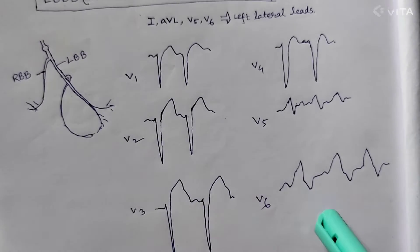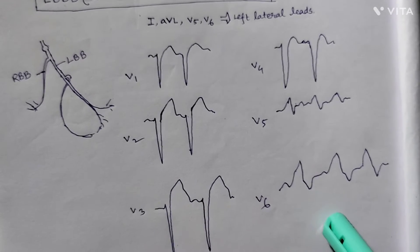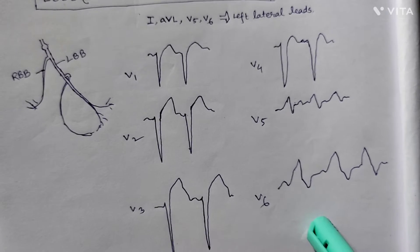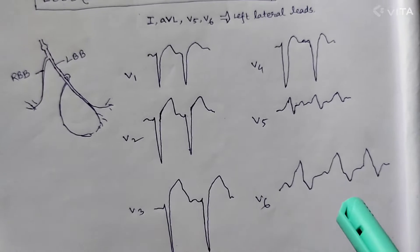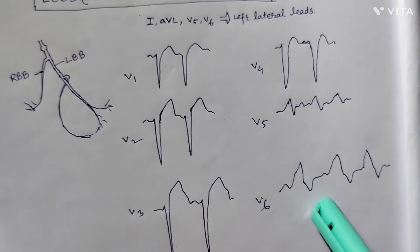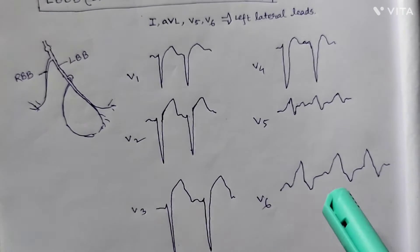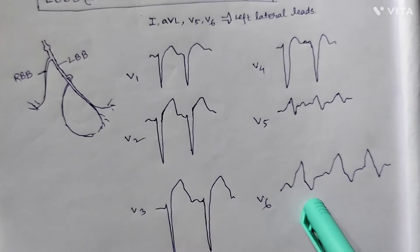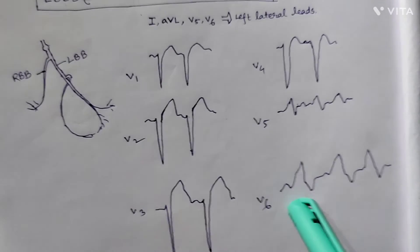You may also come across the RSR prime pattern or the notching pattern that I discussed in RBBB in the left lateral leads, but that is not very common in LBBB. In LBBB, you will more often than not find the wide QRS pattern.